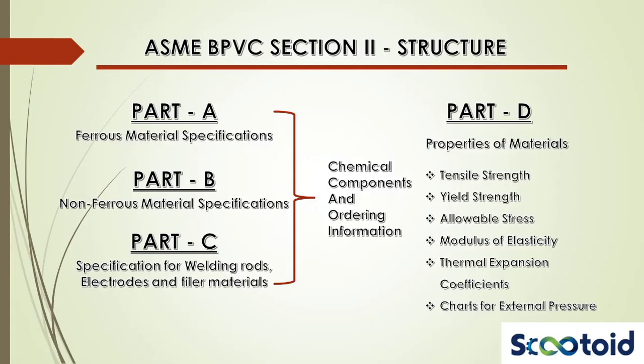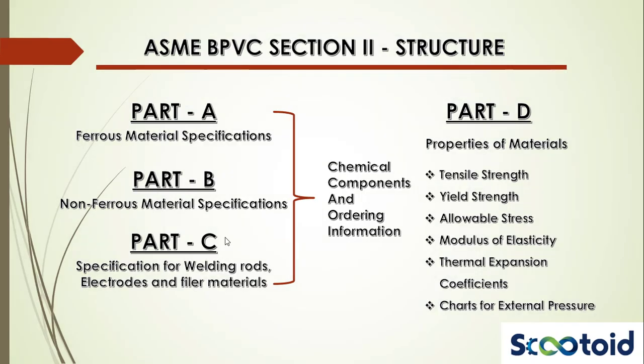The ASME BPVC Section 2 has been divided into four parts: Part A, Ferrous Material Specifications; Part B, Non-Ferrous Material Specifications; Part C, Specification for Welding Rods, Electrodes and Filler Metals; and Part D, Properties of Materials.